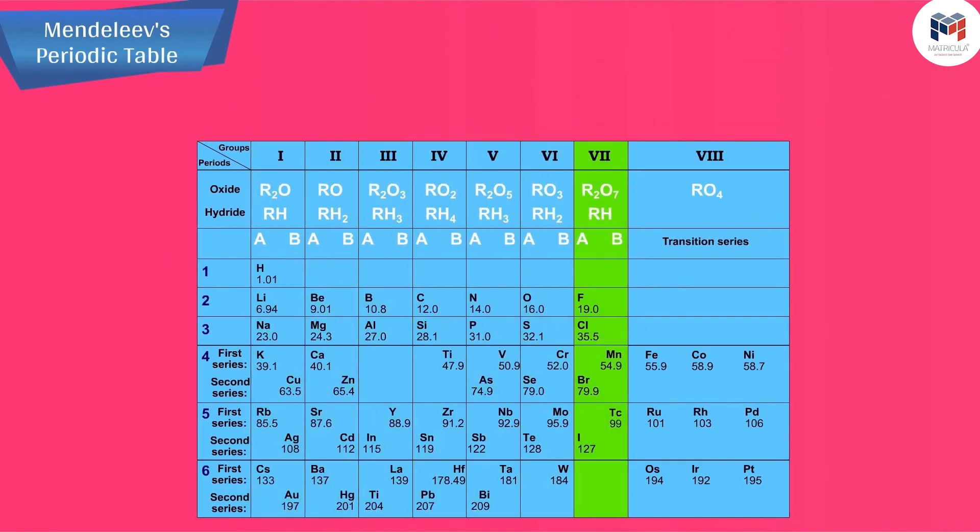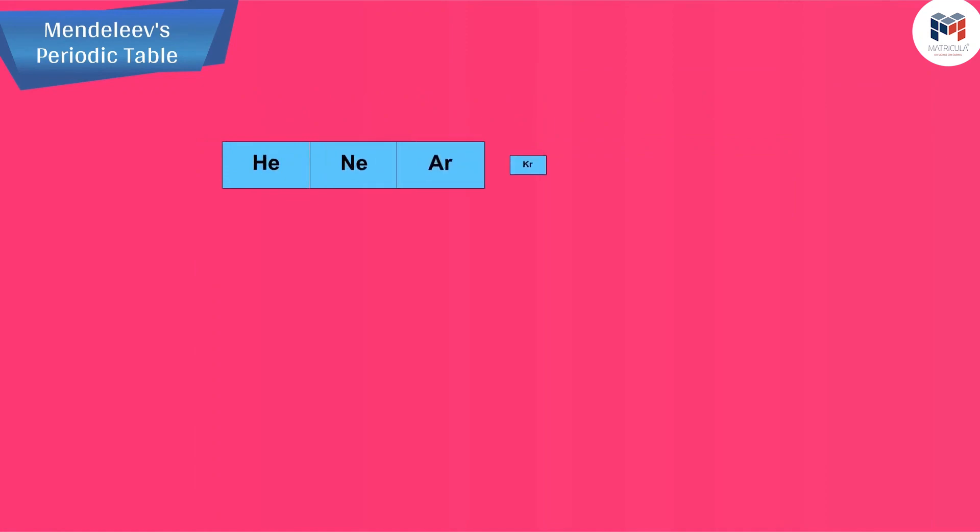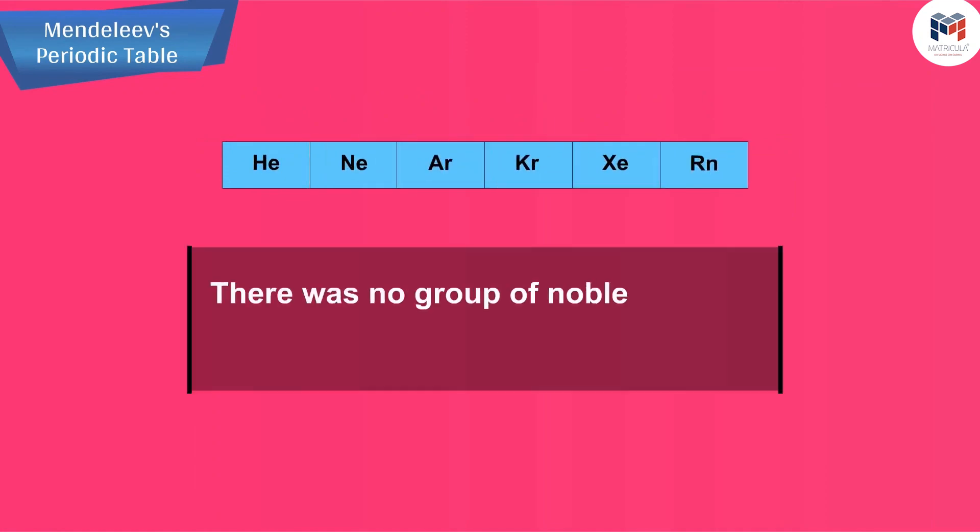Out of eight groups, first seven groups are of normal elements and eighth group is of transition elements. Noble gases were not known at that time, so there was no group of noble gases in Mendeleev's original periodic table.